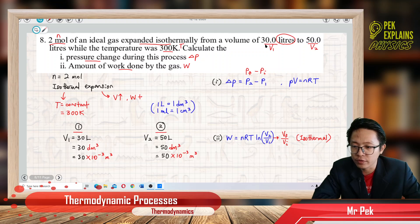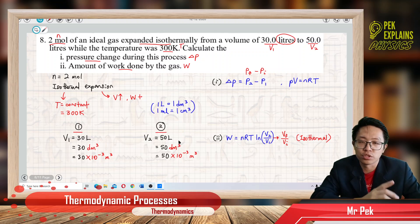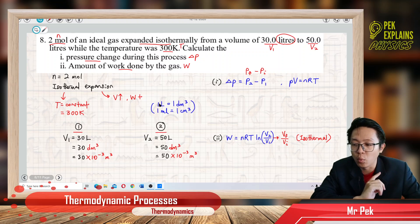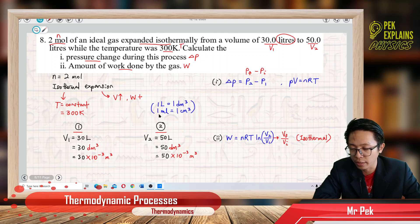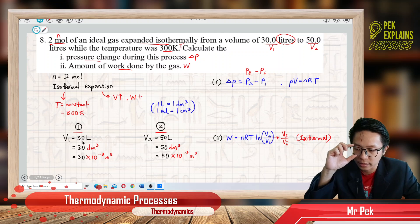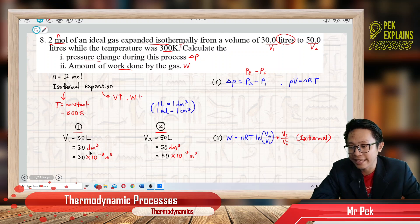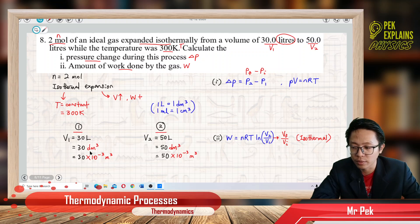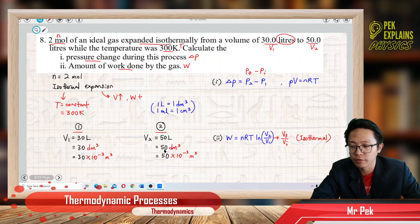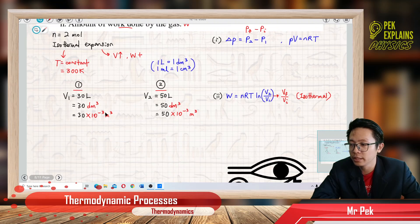The volumes are given in liters, so we must change to SI units — meter cubed. Remember, 1 liter is 1 dm cubed, and 1 mL is 1 cm cubed. So 30 liters is 30 dm cubed. Since deci is 10 to the negative 1, dm cubed becomes 10 to the negative 3 m cubed. So 30 liters becomes 30×10⁻³ m³, and 50 liters becomes 50×10⁻³ m³.